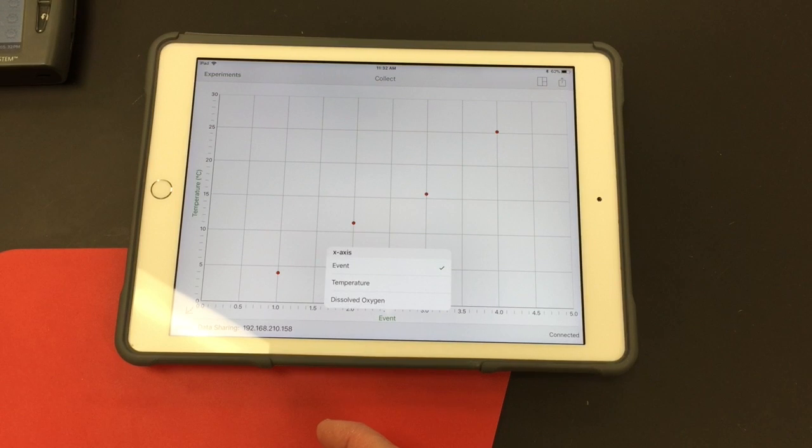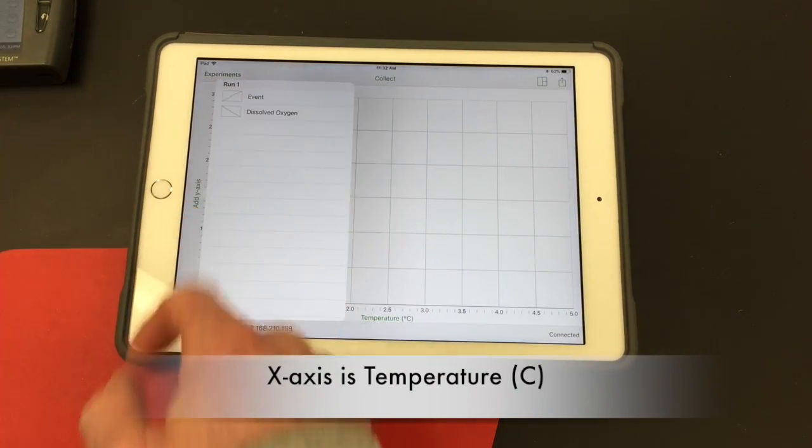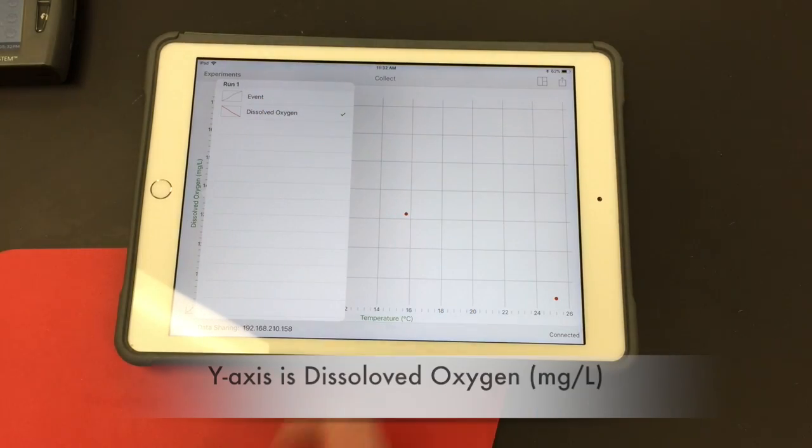So instead of event on the x-axis or the horizontal one, I'm going to change that to temperature. And on the y-axis I'm going to change that to dissolved oxygen.